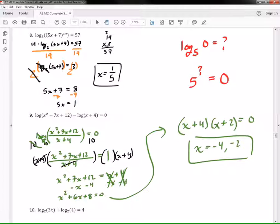So are we allowed to have a zero inside of a log? No, we're not allowed to have a zero or a negative number. So therefore, negative four, you're out. You are an extraneous solution.